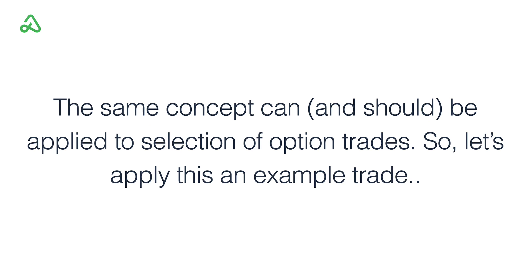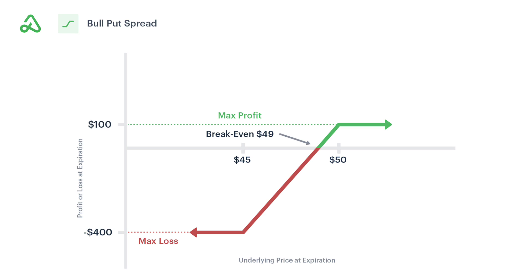The same thing can obviously be applied to options trading, and we should apply the same criteria to how we choose our trades. Let's go through an example with a sample trade — a bullish put spread. This is a pretty standard, popular option strategy where you're selling options out of the money. You have a bullish position on the stock, or at least you don't think it's going to go significantly lower. So you sell the 50 strike put option and buy the 45 strike put option. Let's assume the stock is trading at around $60.